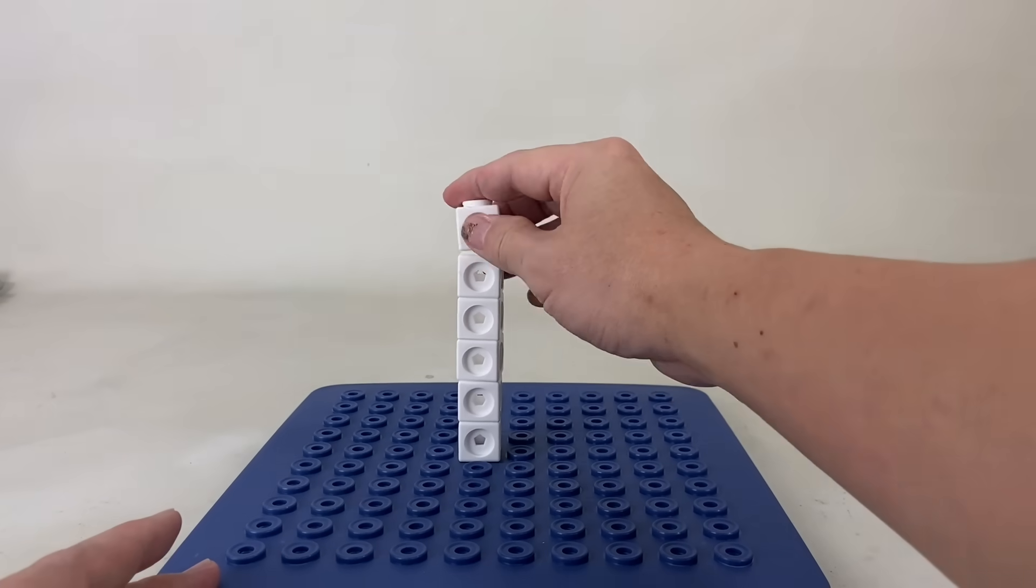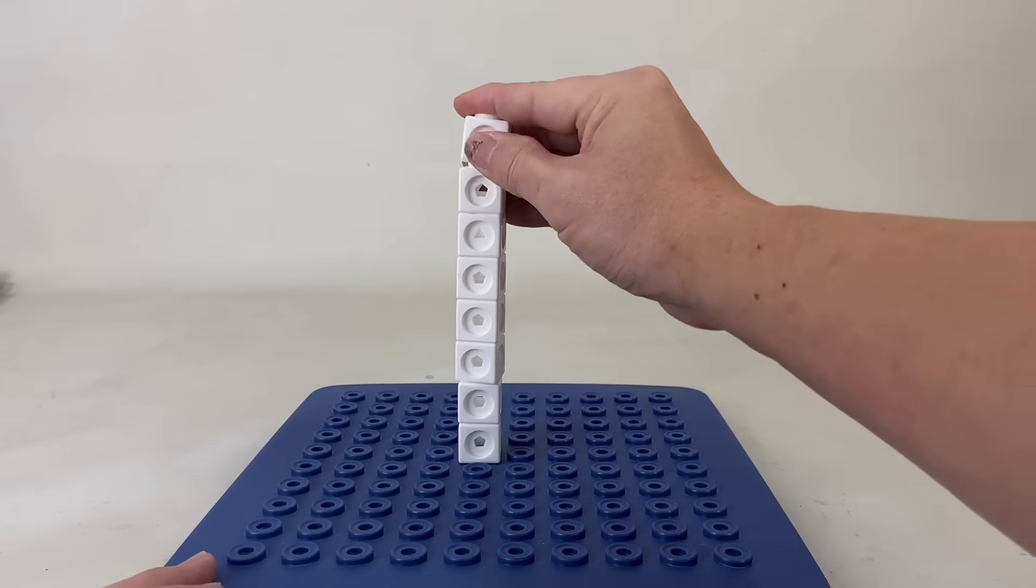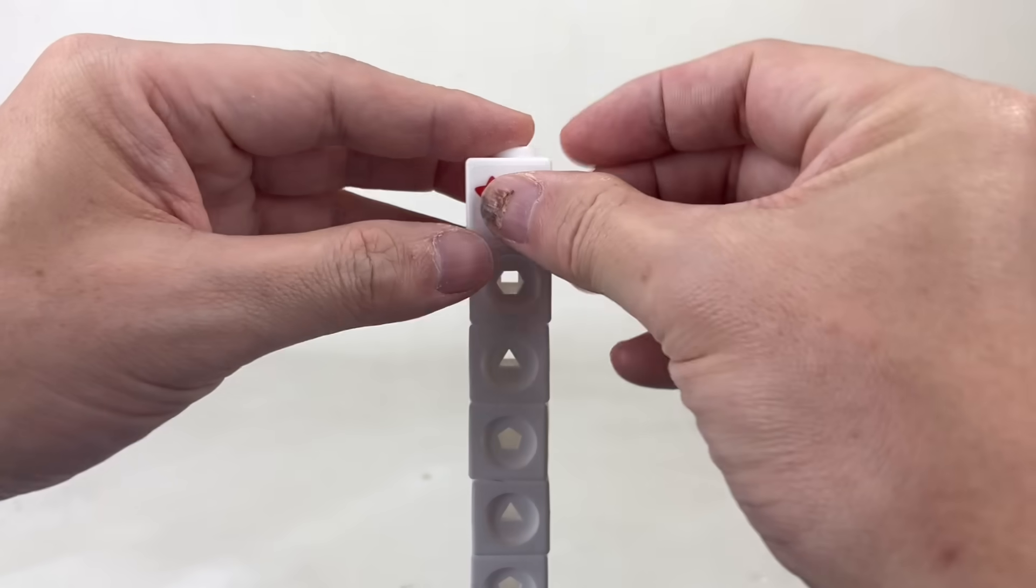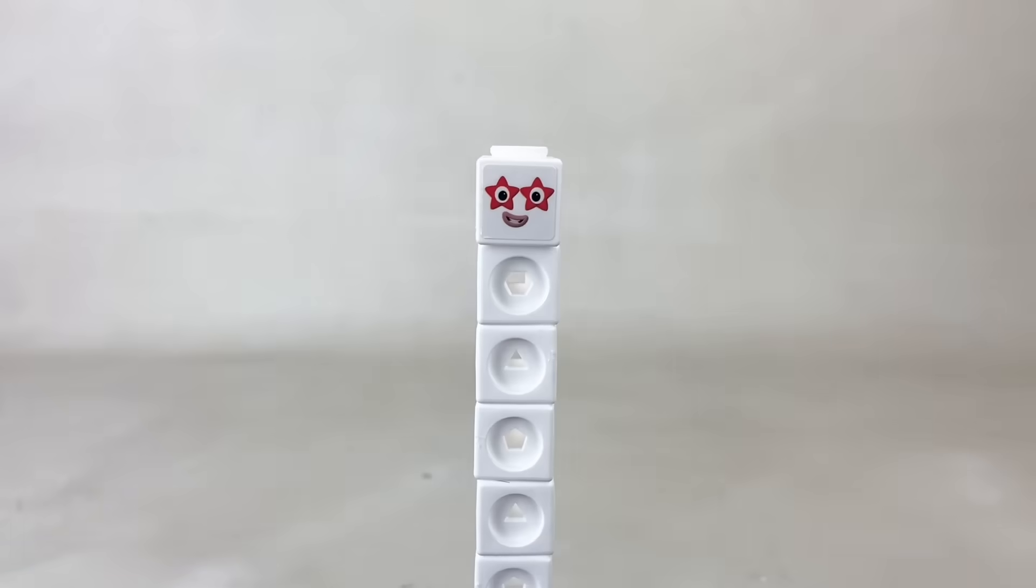For our first character, we'll use 10 white cubes and stack them upwards. Do you know who this hero with zeros is? It's 10!